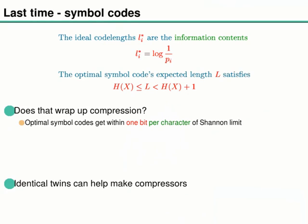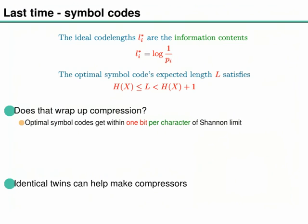Let me recap what we did last time. We introduced symbol codes, which are widely used. We have a Huffman algorithm that gives you optimal symbol codes whose expected lengths are within one bit per character of the entropy. But we argued that being within one bit per character is not very good if the actual entropy per character is something small like 0.1 bits - which is often the case, for example when compressing English. We looked at arithmetic coding, which thinks of a binary file as defining a single real number between 0 and 1.